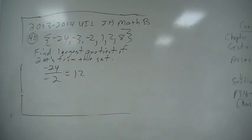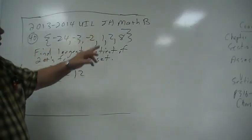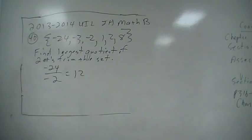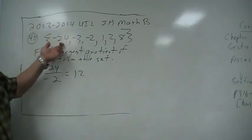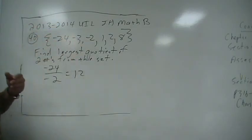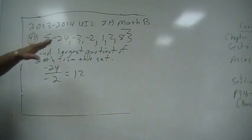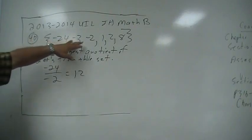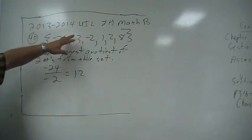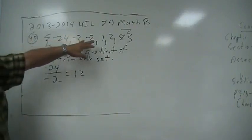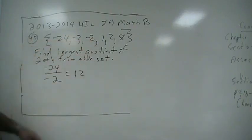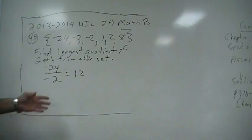Number 40. We've got these digits here. It says find the largest quotient of two of the numbers from this set. Negative divided by negative is positive. 24 divided by 3 is 8. 24 divided by 2 is 12.